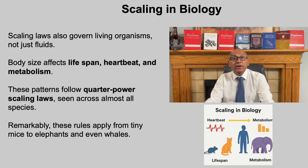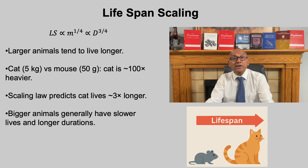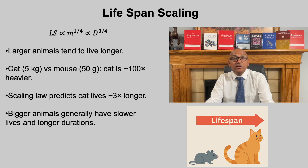Scaling is equally important in biology. Living organisms show clear patterns where size dictates life span, heartbeat, and metabolism. What is remarkable is that these follow consistent rules known as power-law scaling laws, linking tiny creatures like mice to much larger species like elephants and even whales. Life span is one of the clearest examples: it increases with body mass to the one-fourth power. A cat is about 100 times heavier than a mouse, yet its life span is only about three times greater. Bigger species tend to live longer lives, but the increase is gradual rather than dramatic.